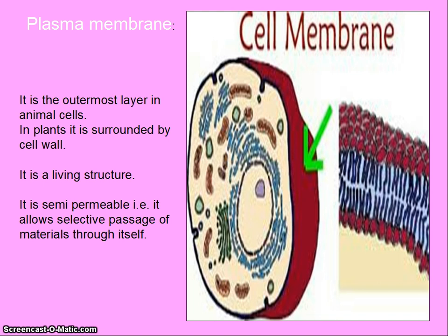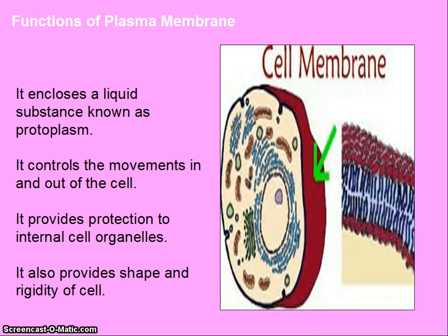Plasma membrane. It is the outermost layer in animal cells. In plants it is surrounded by the cell wall. It is a living structure and it is semi-permeable, meaning it allows selective passage of materials — it allows the entry and exit of some materials while it checks the entry and exit of others. Functions of the plasma membrane: it encloses a liquid substance known as protoplasm, it controls the movement in and out of the cell, it provides protection to internal cell organelles, and it also provides shape and rigidity to the cell.